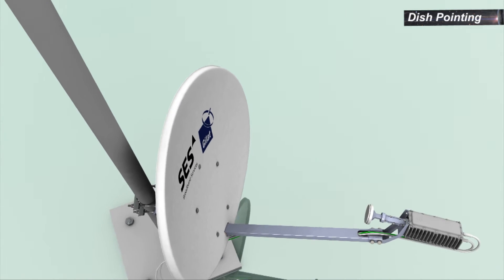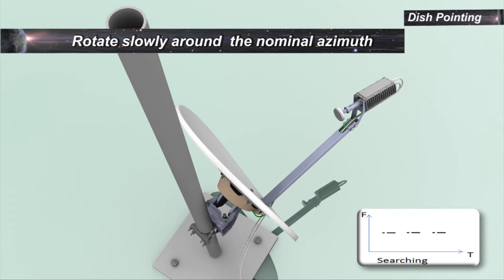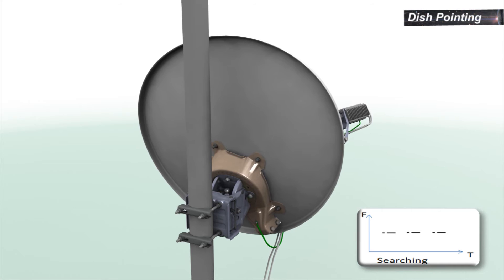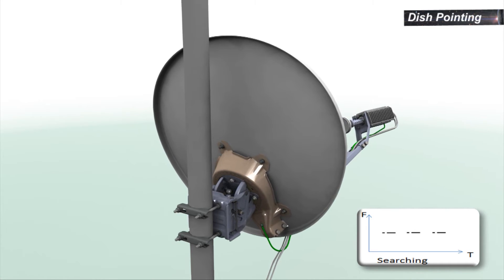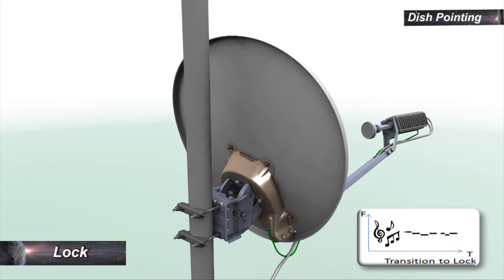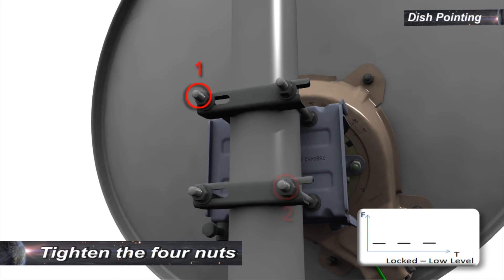To lock onto the satellite, rotate the dish as slowly as possible around the nominal azimuth until the beeping tone changes, indicating that the modem is locked on the satellite. Lock is indicated by a two-second transitional tone. Once the transceiver emits the lock tone, stop rotating the dish and tighten the nuts of the clamp.